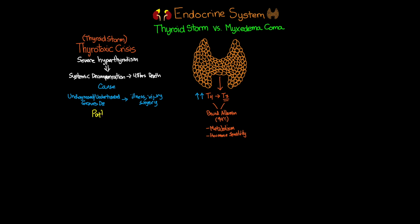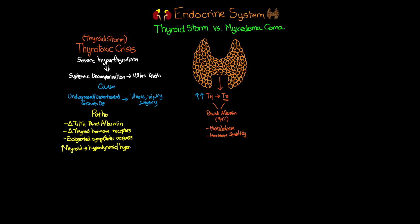The pathophysiology of thyroid storm has a few theories: one involves changes in how thyroid hormone binds to albumin; another involves changes in thyroid hormone receptors on target tissues; and a third suggests an exaggerated response to sympathetic activity. We're not quite sure which — or what combination — is the determining factor, but the end result is the same: excessive thyroid hormone puts patients in a hyperdynamic and hypermetabolic state that disrupts major body functions.